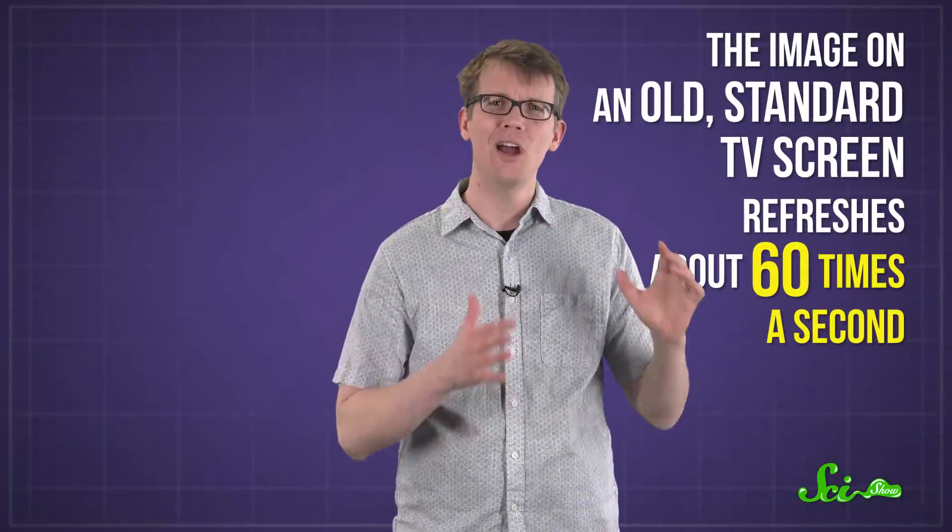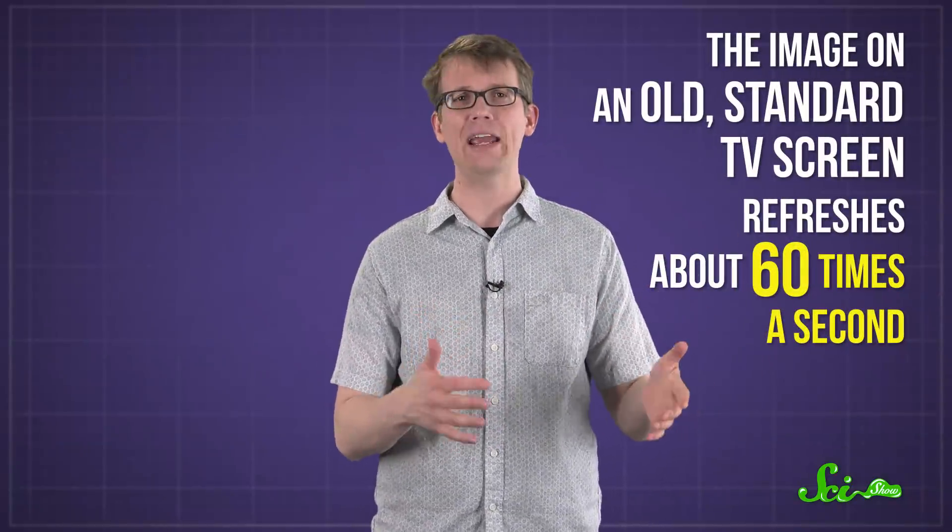The image on an old standard TV screen refreshes about 60 times a second, fast enough that we can't see the individual pictures, but too slow to fool our furry best friends. So to your pup, your favorite show might look less like a video and more like dancing in a very fast strobe light, or thumbing through a flipbook.